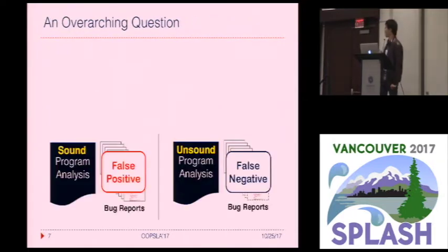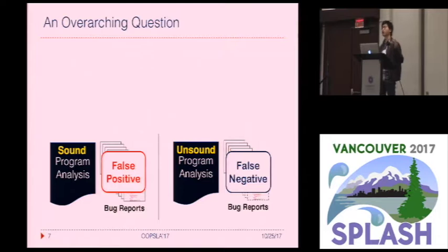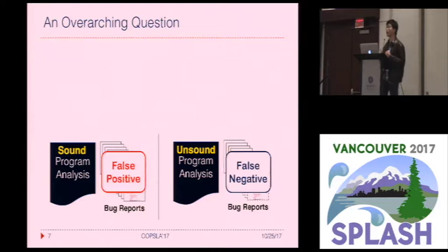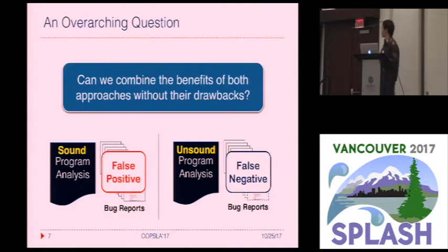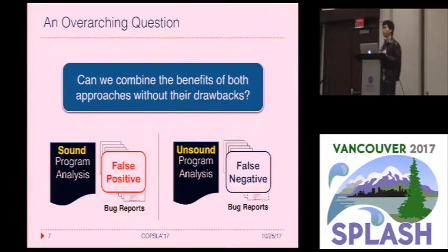So on one hand, we have a fully sound analysis which produces a lot of false positives. On the other hand, we have an unsound analysis which produces very few false positives but comes with false negatives. So the question is how we can combine the benefits of both approaches without their drawbacks.